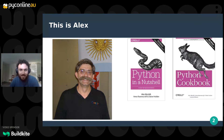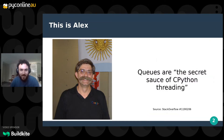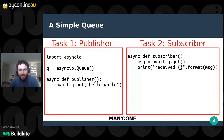The name of the guy in this picture is Alex Martelli. He's authored several well-known books on Python. If you haven't read his books, you've probably seen something of his on Stack Overflow, where he's got a pretty high karma score, as you can see. In one of his posts, he called queues the secret sauce of CPython threading. Now, what the hell did he mean by that? Before I answer that question, let's go through a little background about how queues work.